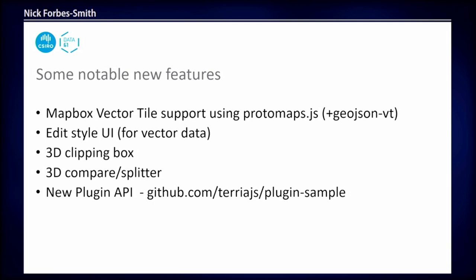Notable new features: we finally added Mapbox vector tile support — took a long time — using a new library called Protomaps. There's a presentation about that tomorrow if you're interested. We've added a new UI to allow people to edit the styling of vector and tabular data. We've also added some new 3D data manipulation features — Clipping Box, Compare, Split — and a new plugin API which allows much easier extendability of Terria, whereas before you were having to fork the codebase and modify it.